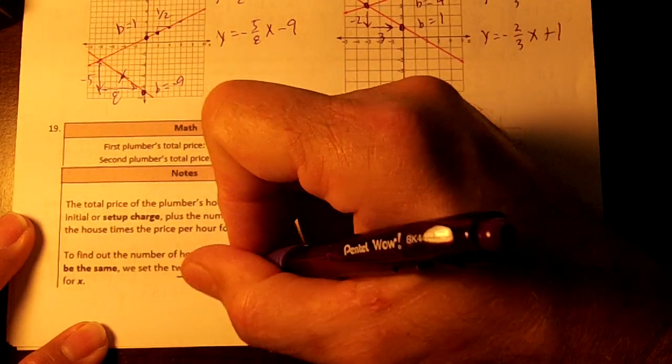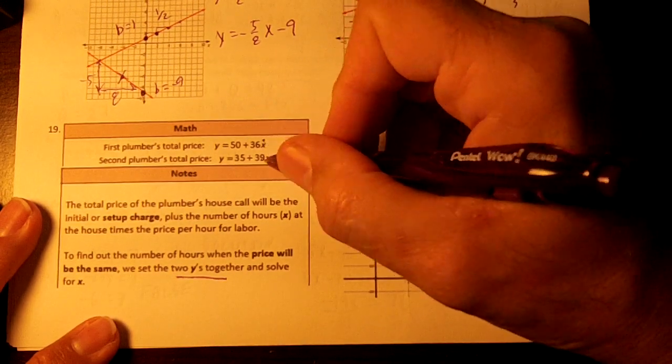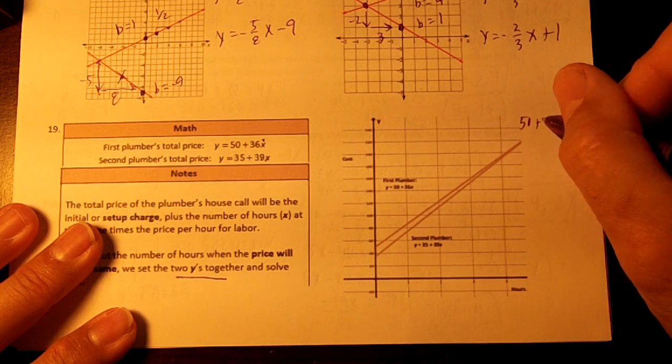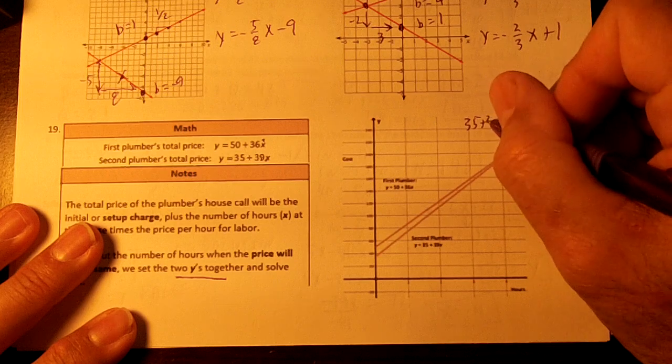Okay, we want to find out when the y's will be together. So we're just going to set these two equations equal to each other. So 50 plus 36x is going to equal 35 plus 39x.